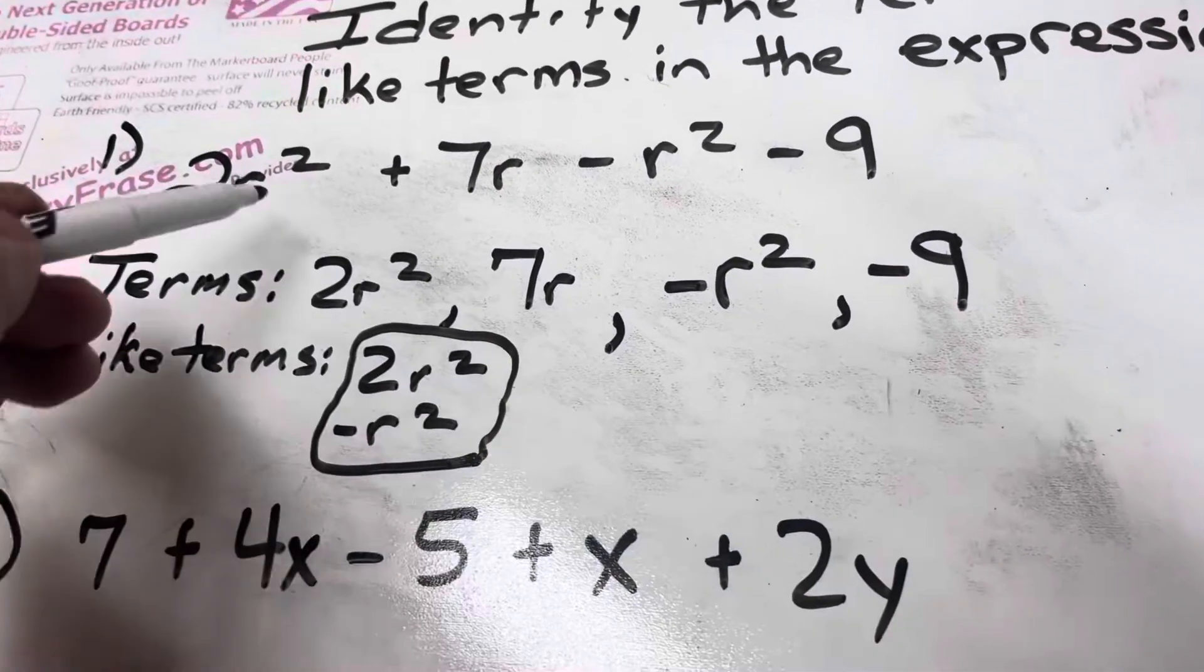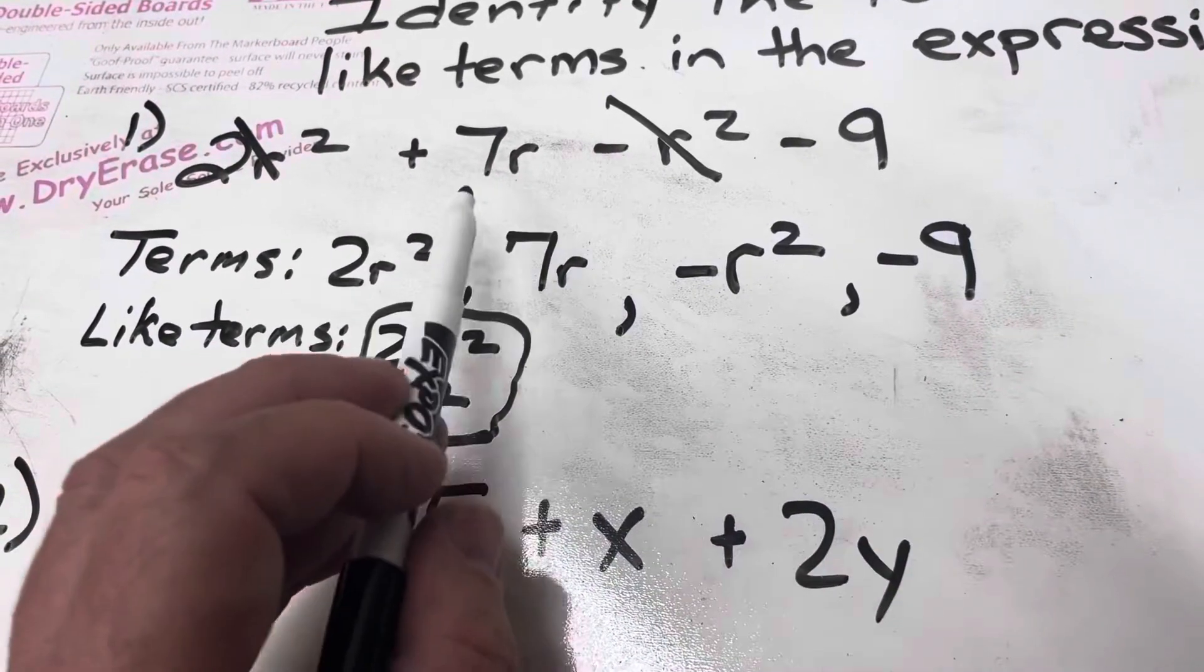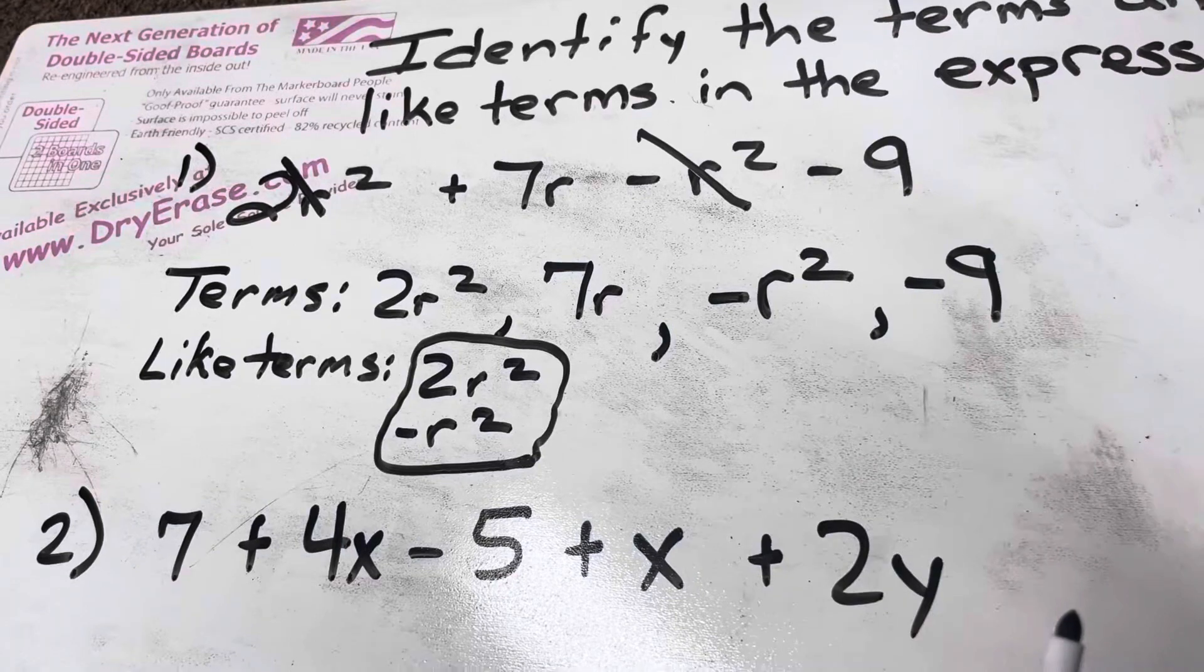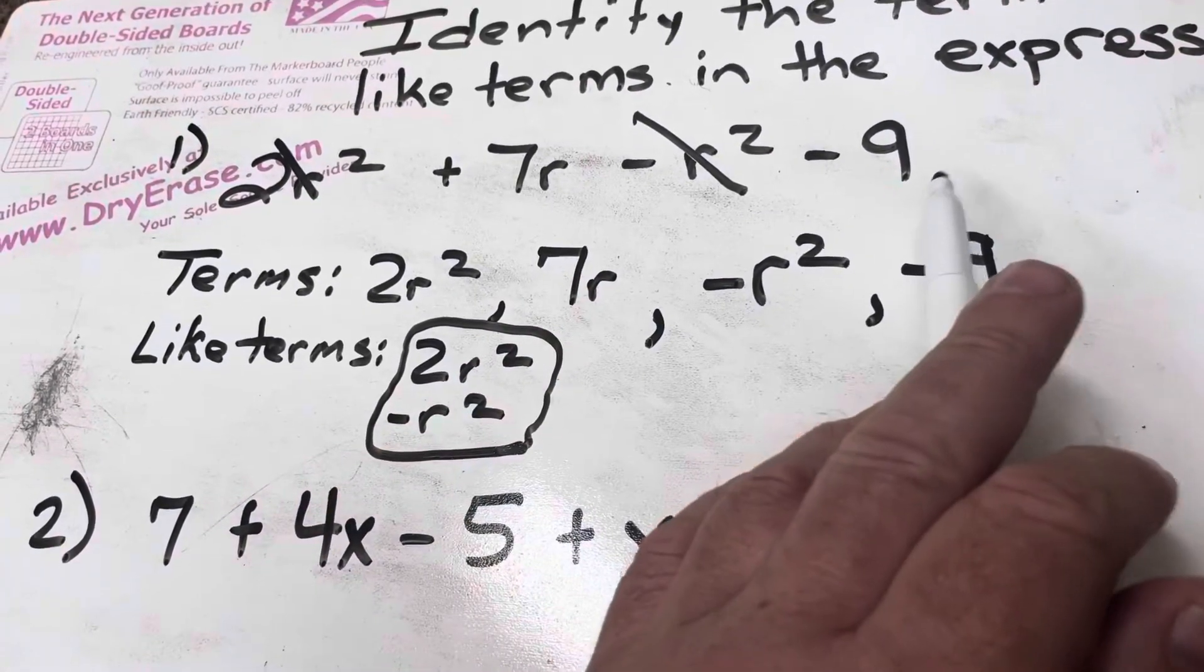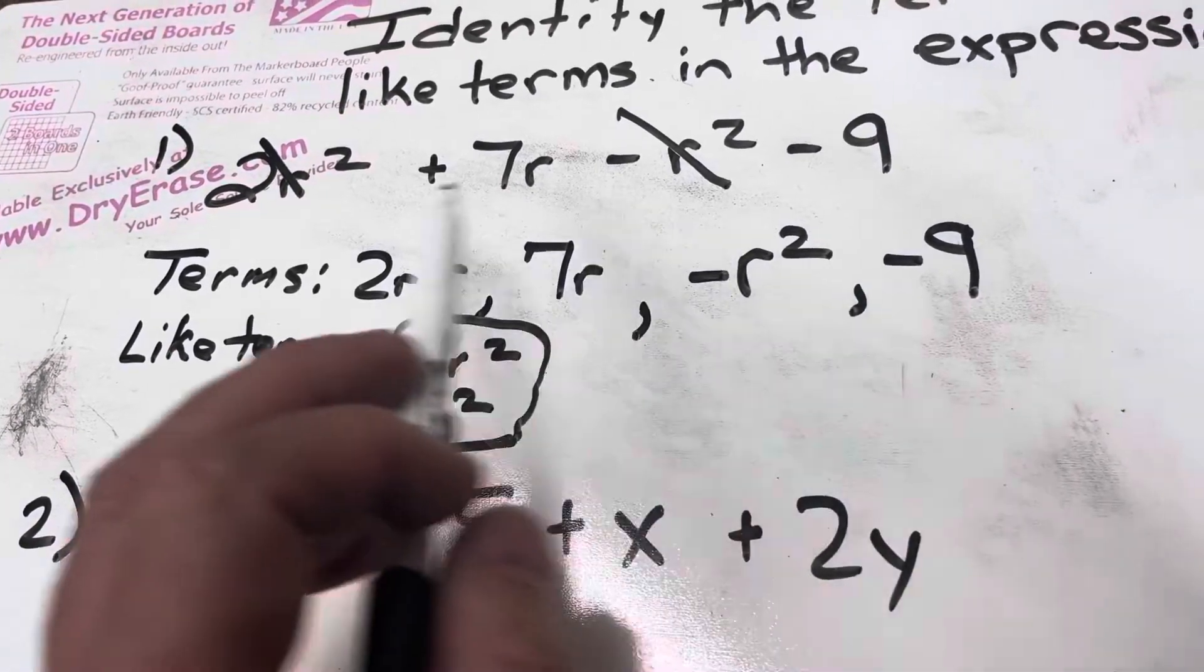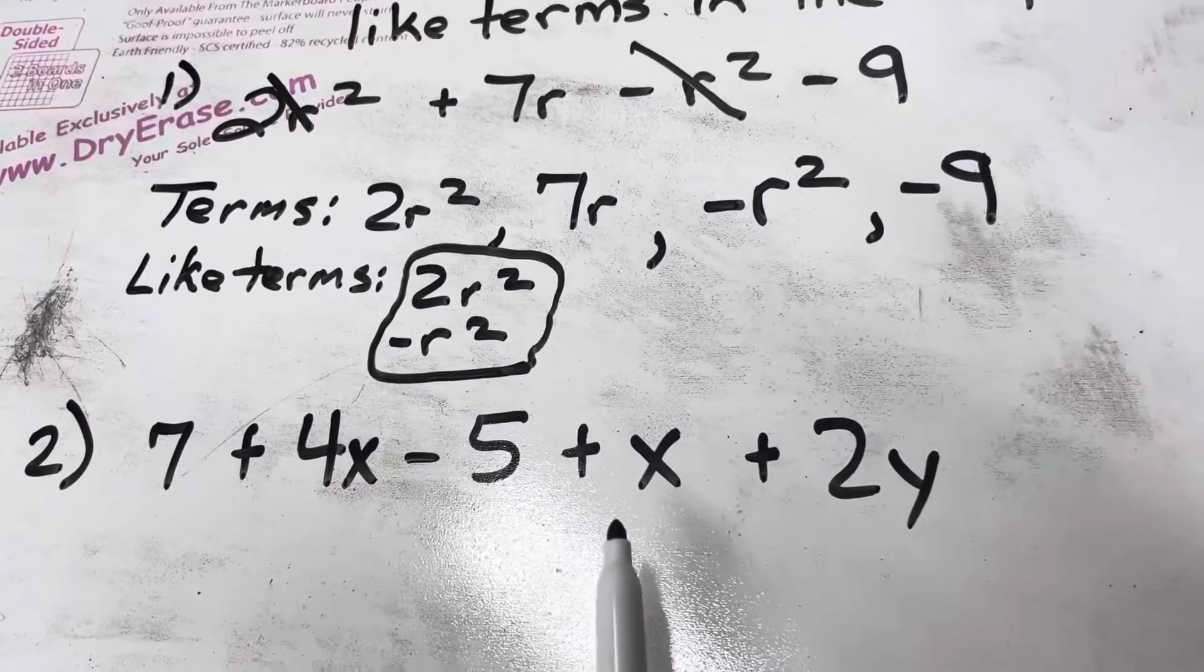Now, my other two terms, I've got a plus 7r and a negative 9. Those are not like terms. This has a variable. This doesn't. There's no exponent. But the only set of like terms in this expression here are 2r squared and negative r squared.